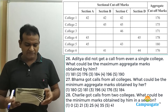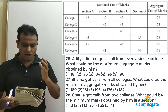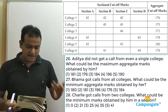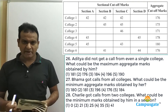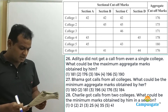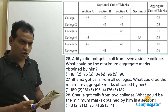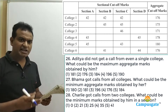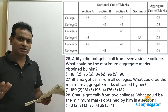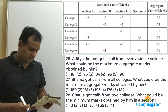Let's look at the first question. Aditya didn't get a call from even a single college. What could be the maximum aggregate marks obtained by him? A person may not get calls from any college if he doesn't satisfy the individual cutoffs — that's a very important point.